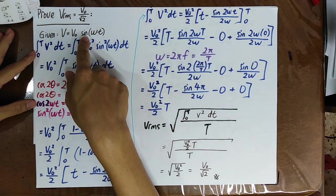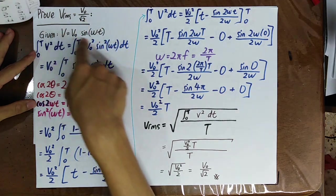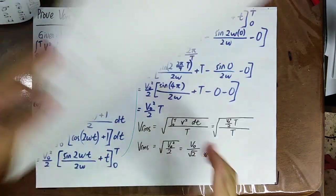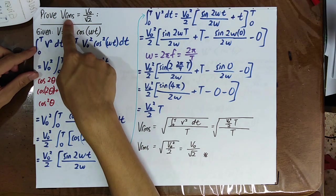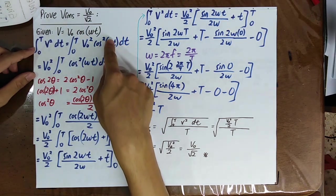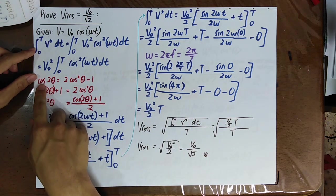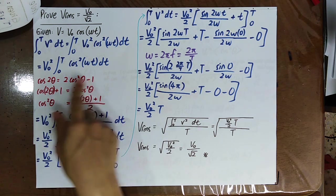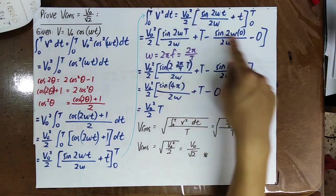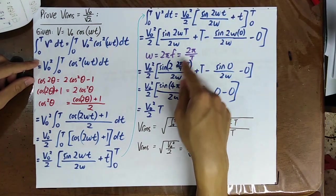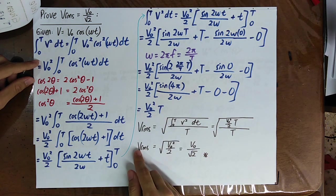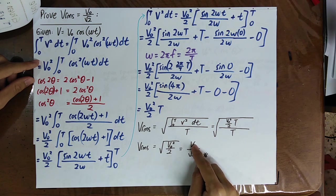Note that this derivation was done for a sine voltage function. If the voltage supply is instead given as a cosine function, we use the identity cos(2θ) = 2cos²(θ) − 1. Substituting everything, integrating, and setting ω = 2π/T, certain terms again equal zero, and we ultimately still obtain the same result: the root mean square voltage equals the amplitude divided by square root 2.